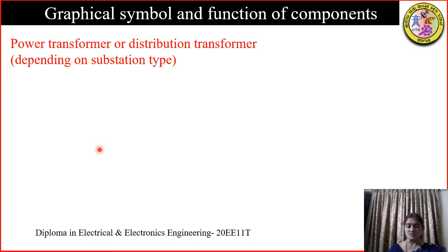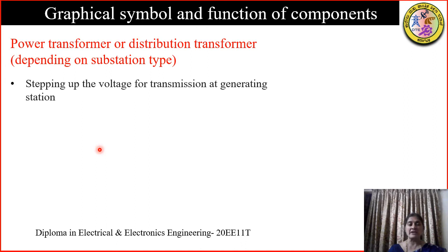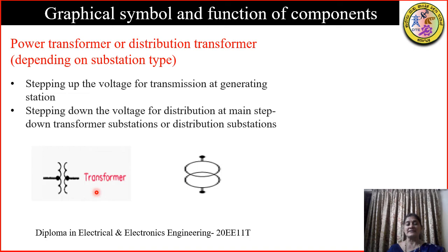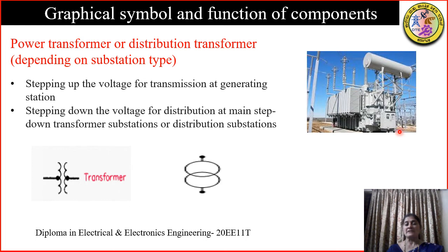The first component is the power transformer. The power transformer is provided in the substation and the type depends upon the type of substation. The power transformer may step up the voltage for transmission at the generating station, while for a distribution substation it will always step down the voltage. Graphically, transformers are represented by either of two symbols when drawing a layout diagram.